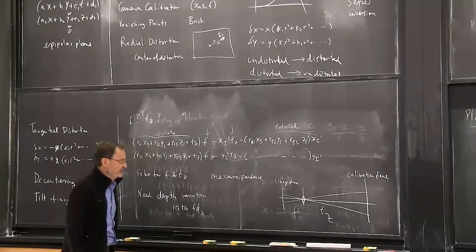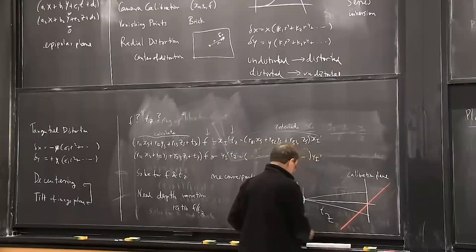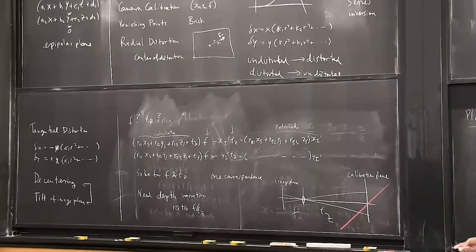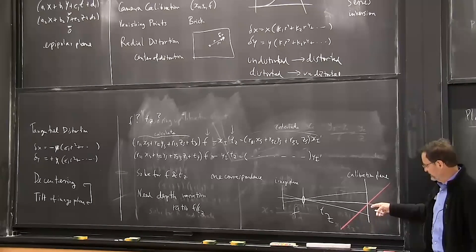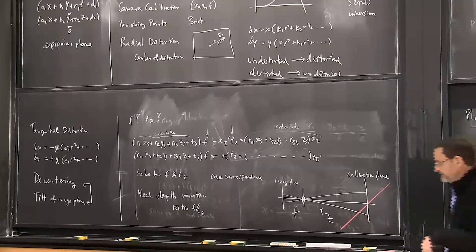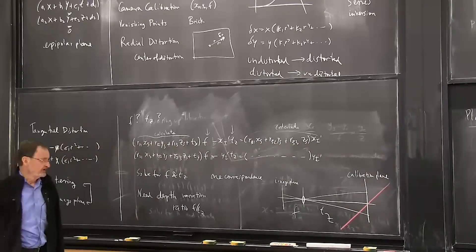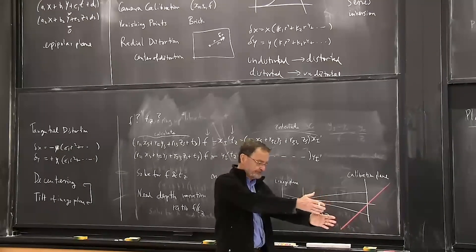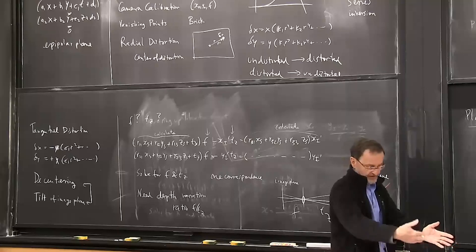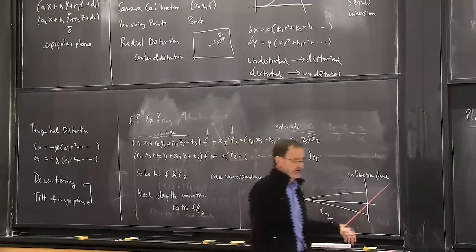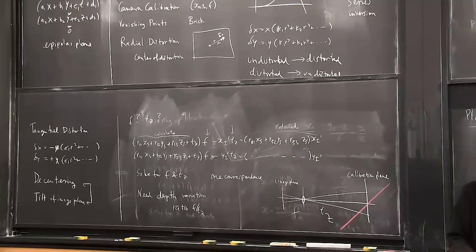There's a problem: we need depth variation. If the calibration target is placed perpendicular to the optical axis, perspective projection has multiplication by f and division by z, so doubling both f and z changes nothing — that's our scale factor ambiguity. In this case you cannot determine f and tz separately, only their ratio. So you need variations in depth. This is why in wheel alignment systems using machine vision, the calibration target is mounted at 45 degrees to the wheel, not perpendicular — exterior orientation is ambiguous if you don't do that.